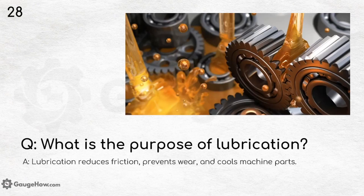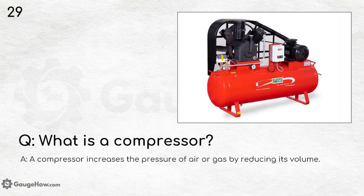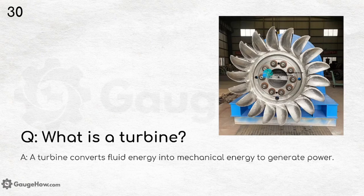What is the purpose of lubrication? Lubrication reduces friction, prevents wear, and cools machine parts so there is no overheating of any element during operation. What is a compressor? A compressor increases the pressure of air or gas by reducing its volume. What is a turbine? A turbine converts fluid energy into mechanical energy to generate power.